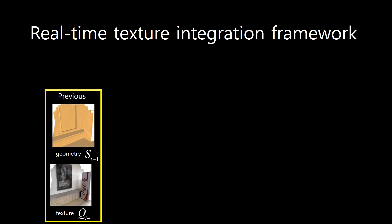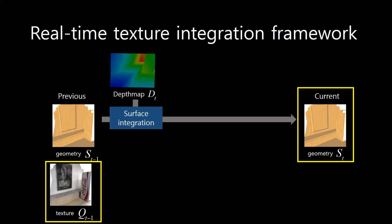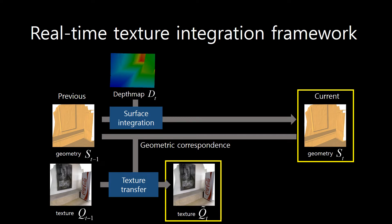In order to update geometry and texture, we first integrate the current depth value into the previous geometry, yielding the current geometry. Since the current geometry is updated, the previous texture is not valid for the current geometry. So we transfer the previous texture map to the current geometry by using the geometric correspondences between the current geometry and the previous geometry. Now the transferred texture map is valid with respect to the current geometry.